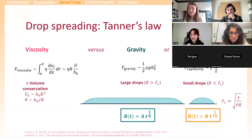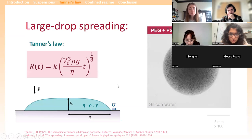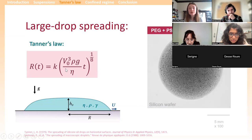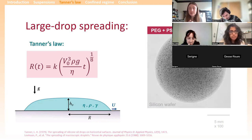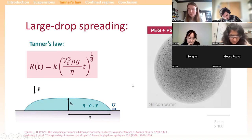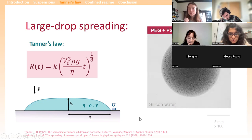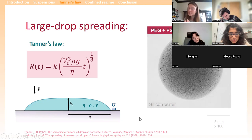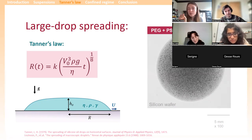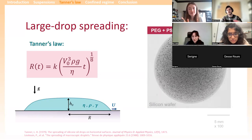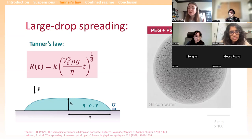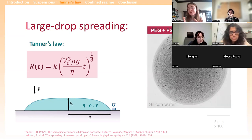Tanner's law says the radius should depend on the drop volume — the larger the volume, the larger the radius. It also depends on the density, which is well-defined since my particles and fluids have the same density, and on the viscosity of the fluid. As you can see in this video of a granular drop spreading with 80-micron particles, the flow is not homogeneous — near the edges there is a region with very few particles, and the particle motion at the center versus edges looks very different.